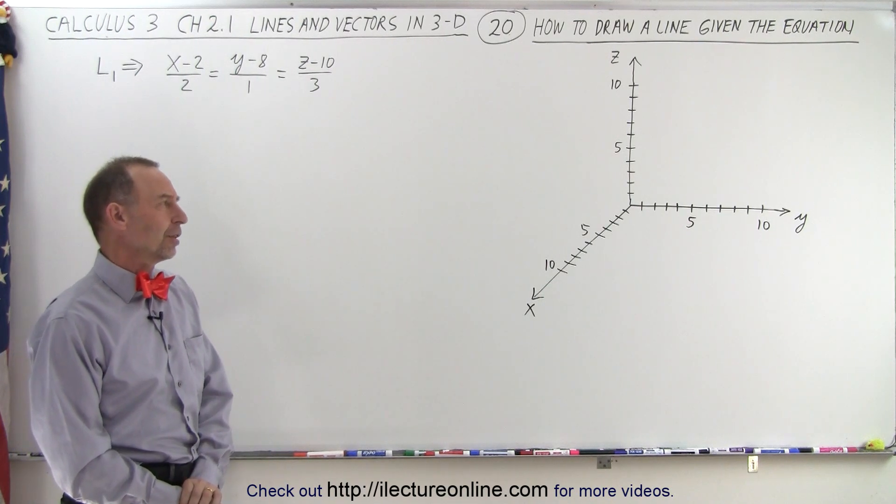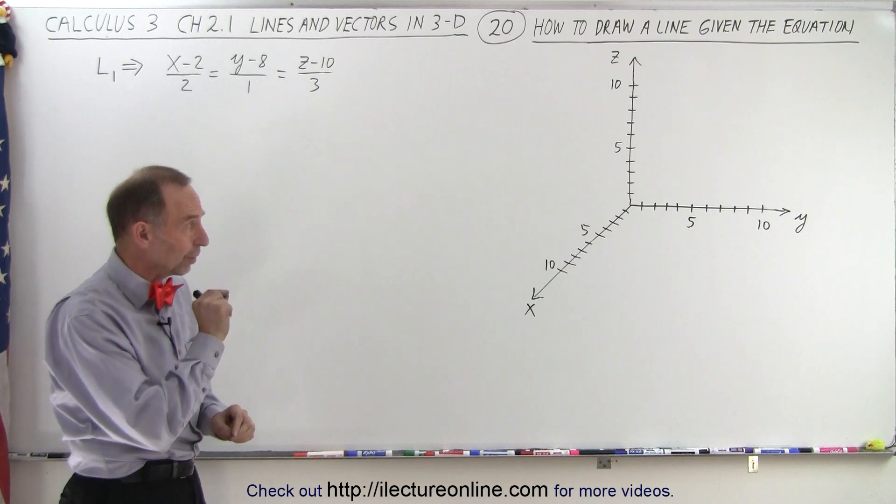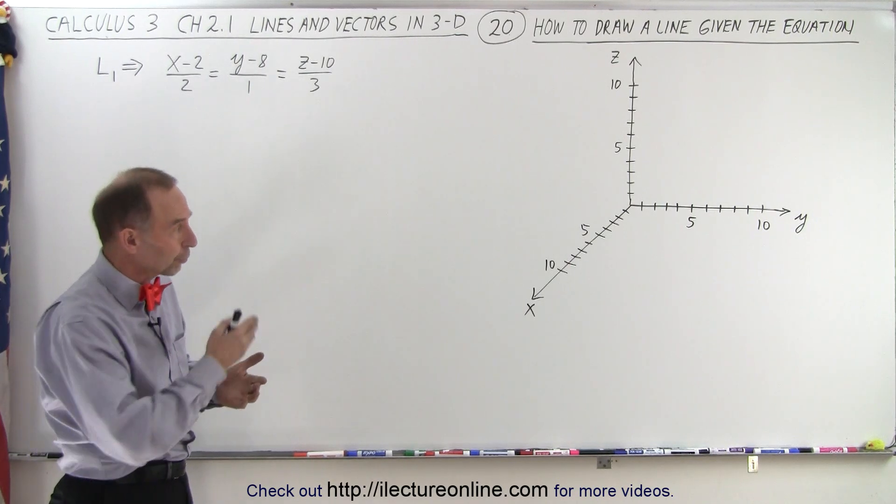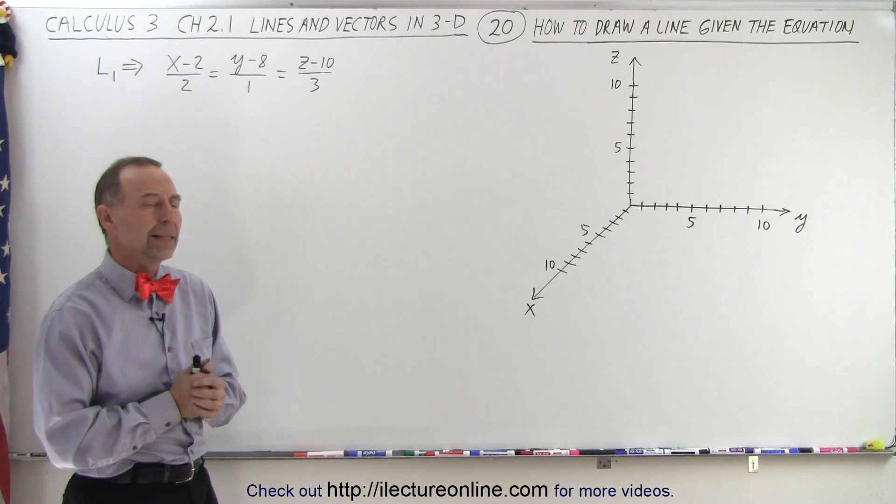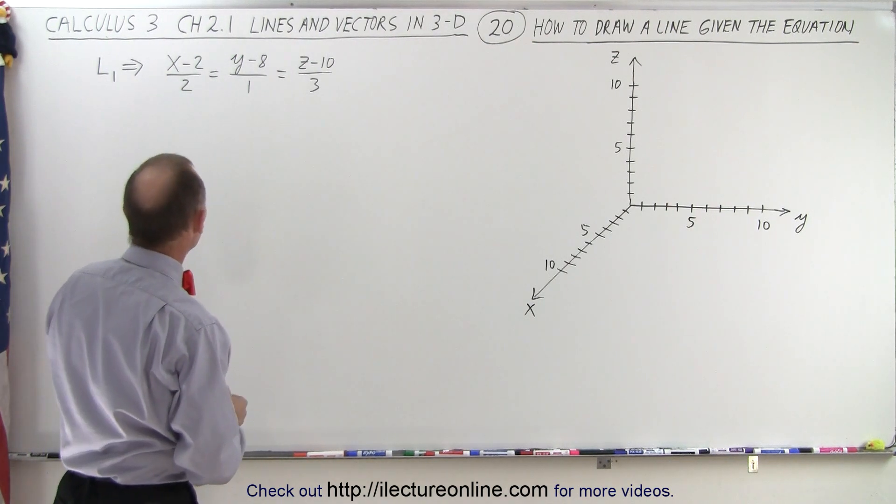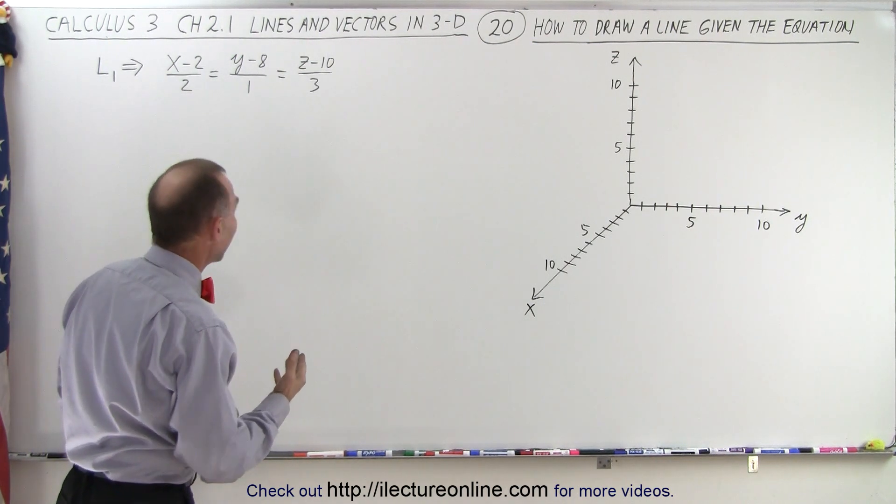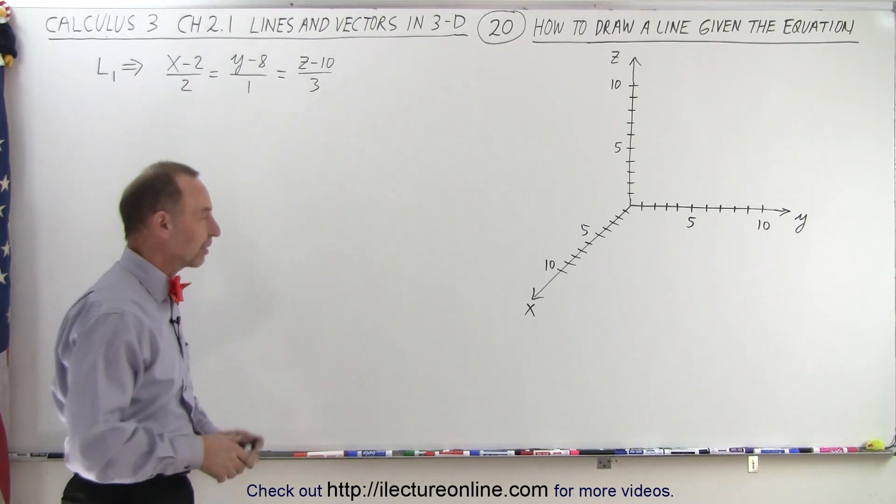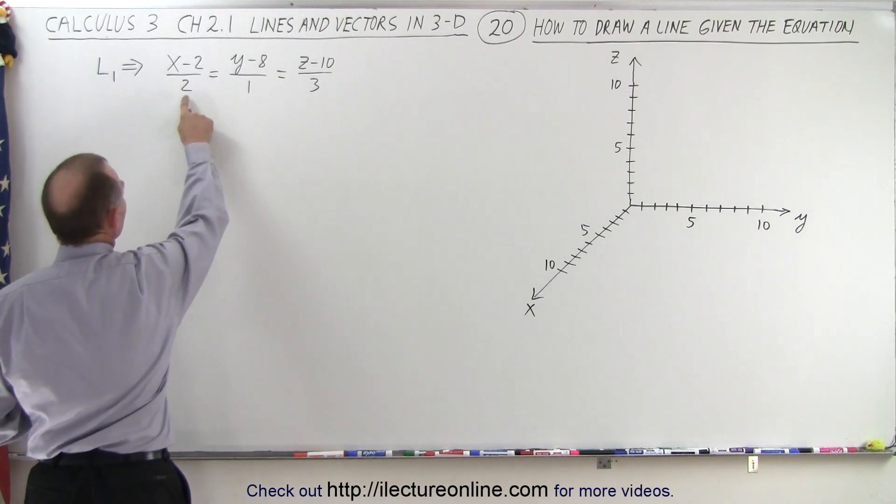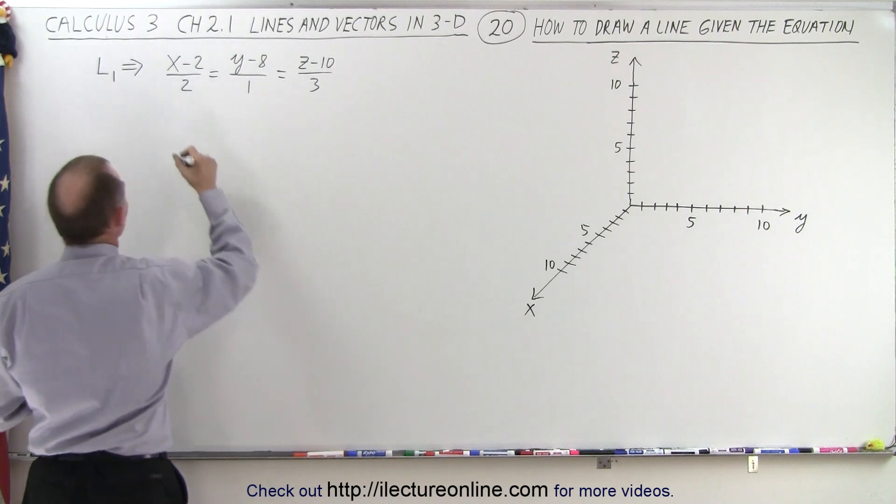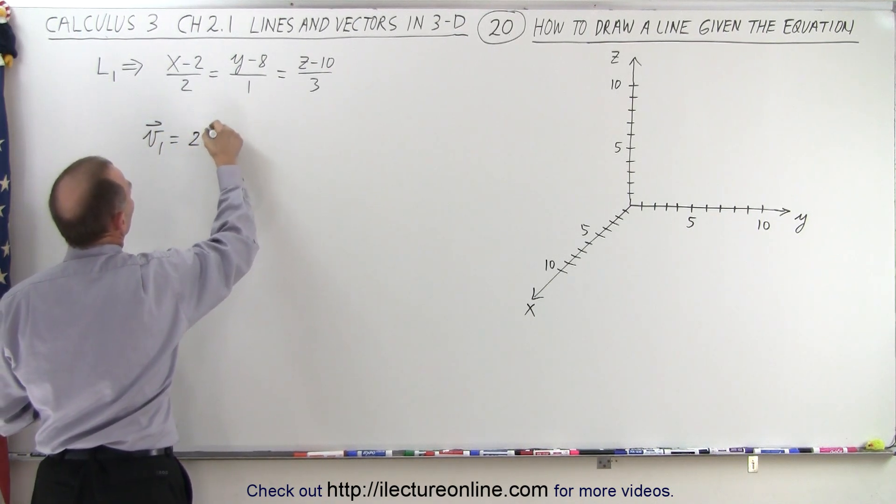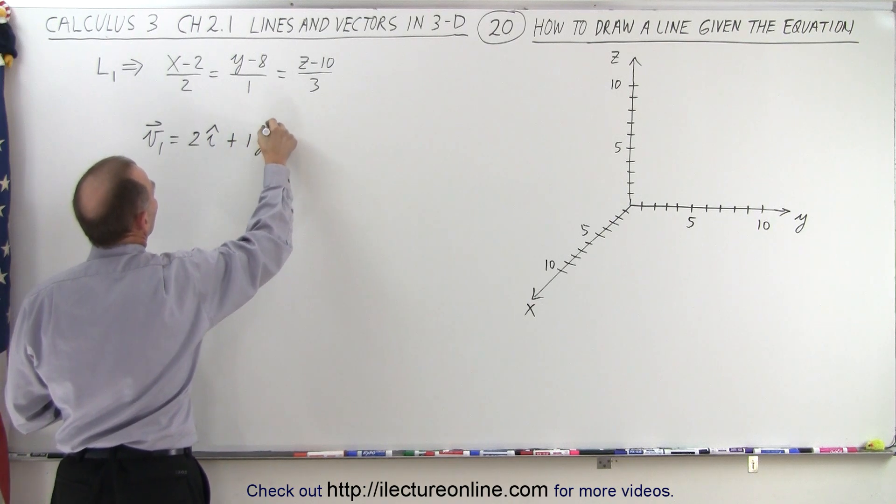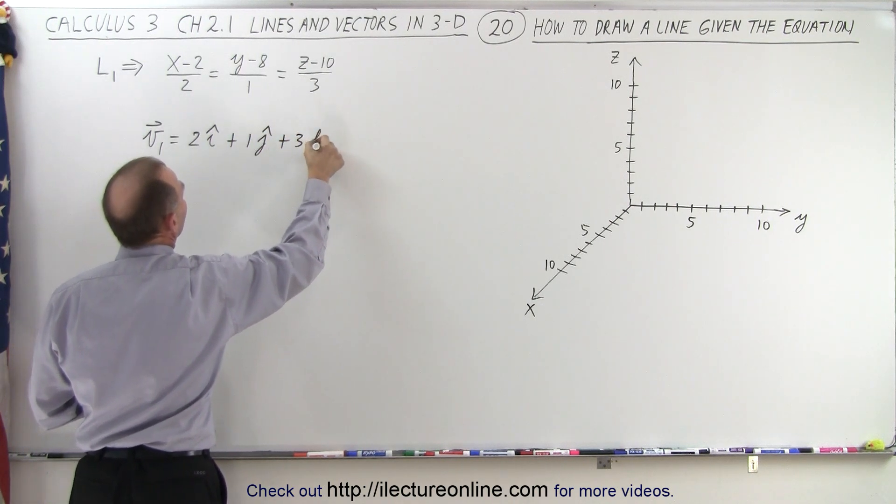Well, first of all, it's a good idea to draw the x, y and z-axis and to label some sort of coordinate system so that you can see where the numbers should fall. Now we're going to take the line equation right here, the general equation, and find the parallel vector. And we do that by looking at the denominators so we know that the parallel vector v1 is equal to 2 in the i direction plus 1 in the j direction plus 3 in the k direction.